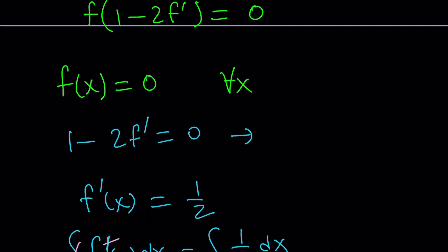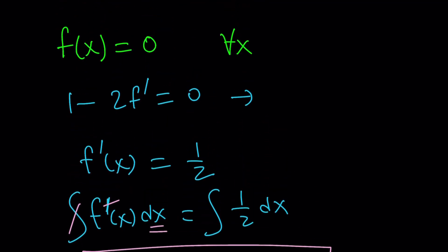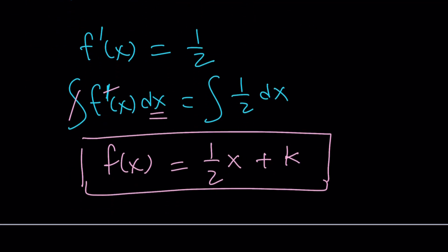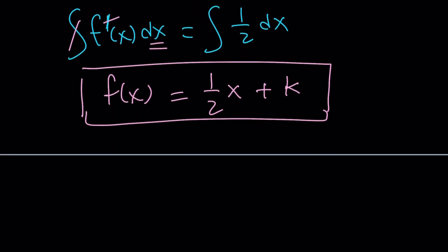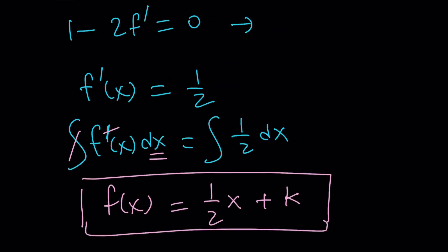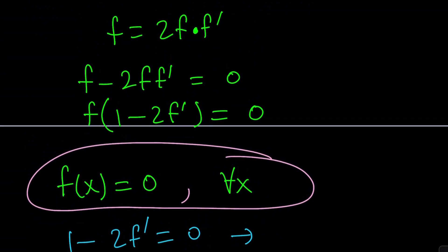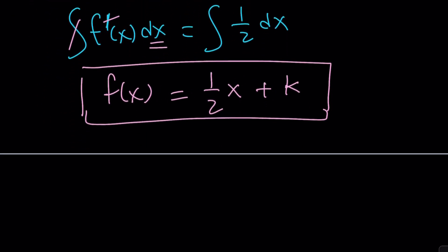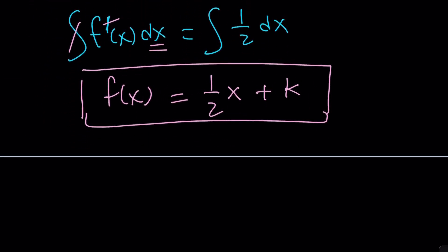So what did we get? We got two solutions. One of them was f is zero for all x values in the domain. The other one is 1 half of x plus k. If the problem's initial condition said something like f cannot be zero, then we'll go with the second solution. But that seems to be a valid solution.